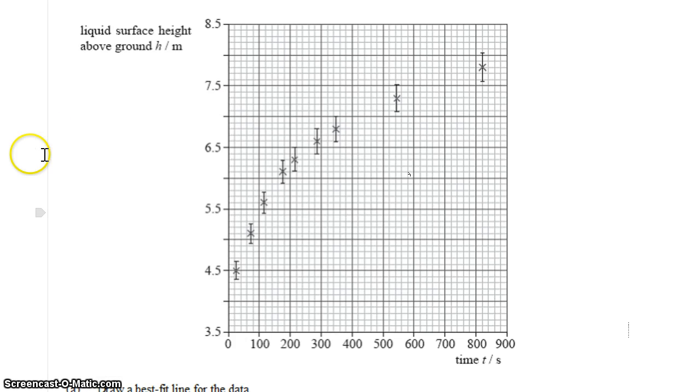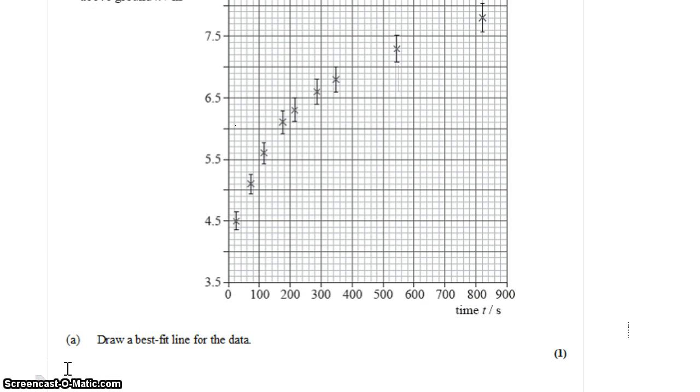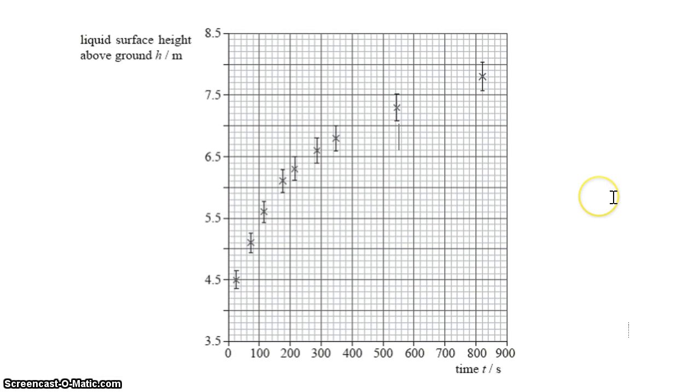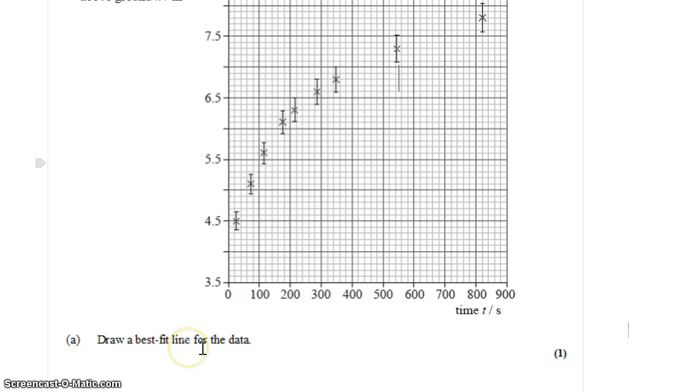So in this question, all we want to do is draw a best fit line for this data, some way of analyzing the trend of this data. And the reason that I chose this question is because we often think of best fit lines as straight lines, and they often are in the context of this course. But they don't have to be. There's no reason they have to be. What they have to be is a smooth, continuous trend that fits the data. So what we don't want to do is we don't want to play join the dots. What we also don't want to do is we don't want to force a straight line when it doesn't apply.